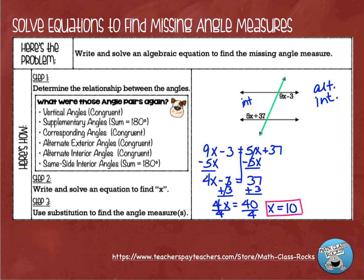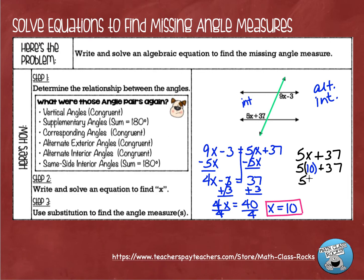I'm going to take either expression — it doesn't matter. I'll do 5x plus 37 because I like to avoid negative numbers whenever I can. Instead of x I'm going to replace it with the value of 10 that we just figured out. So 5 times 10 is 50, and 50 plus 37 equals 87. This angle is 87 degrees. To check: 9 times 10 is 90, and 90 minus 3 is 87. It works out — it doesn't matter which equation you choose, they're equal anyway.